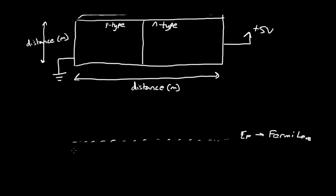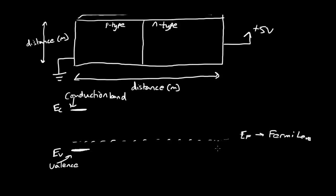With p-type silicon, we know that the valence band is going to be relatively close to the Fermi level, and the conduction band will be relatively far away — E_C and E_V for conduction band and valence band. On the n-type side, it's going to be exactly the reverse: the conduction band is relatively close to the Fermi level, and the valence band will be relatively far away. The distance between the valence band and conduction band is 1.1 eV on both sides.